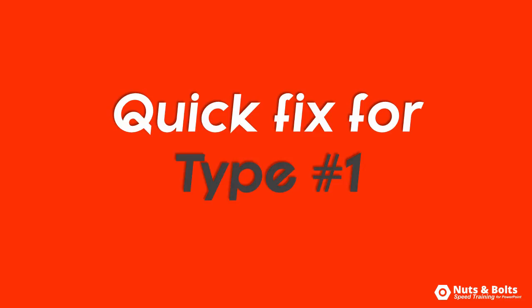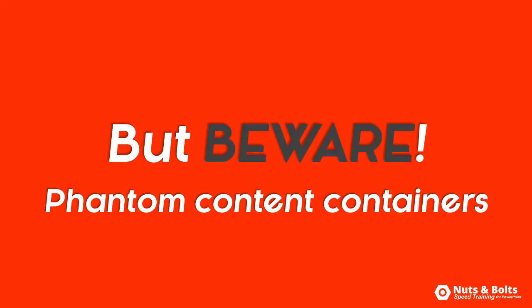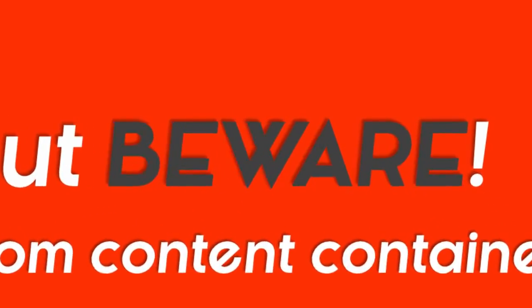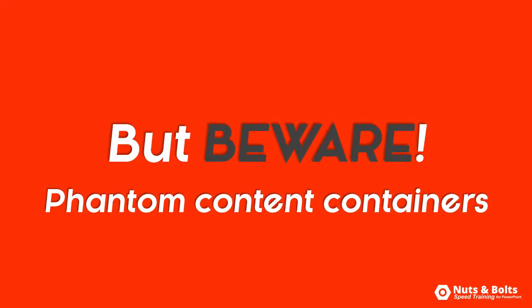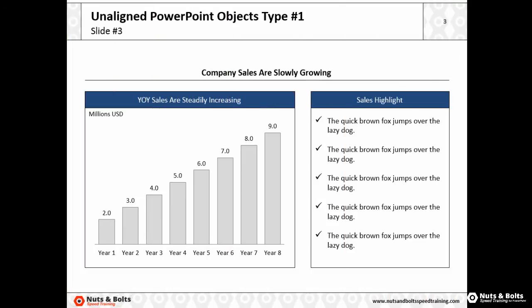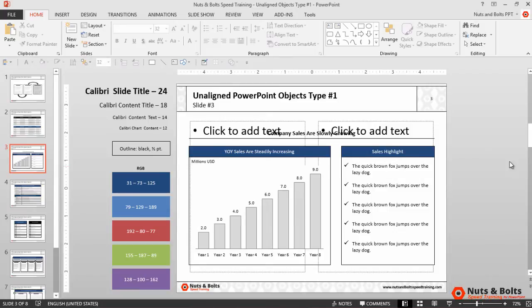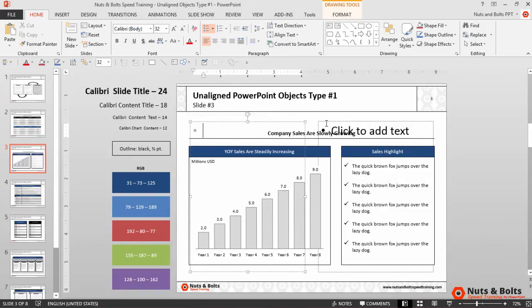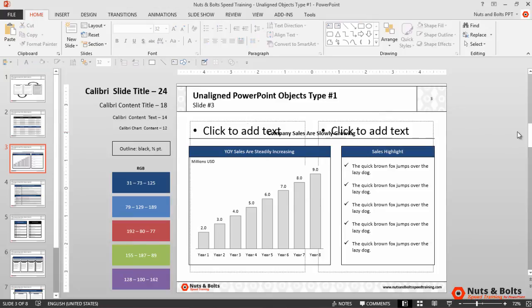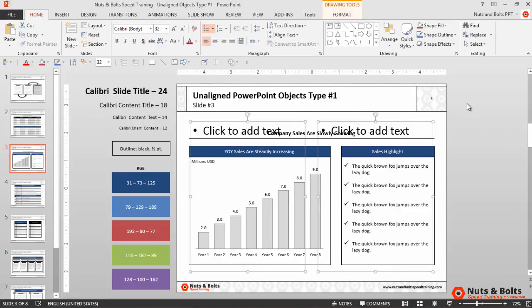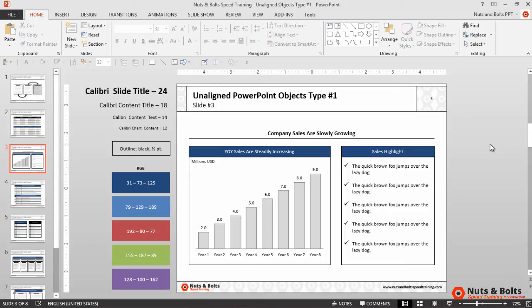That's a quick fix for your type 1 unalignments, but you do need to be careful of phantom content containers. Here on slide number 3 in slideshow mode, look at my graphics in the middle of the slide. When I hit the escape key and go back to normal view, I now have two phantom content containers that were not here before I reset my slide. This means that whoever used this slide layout simply took these two content containers — which are part of the slide layout — hit delete, and then built the slide.